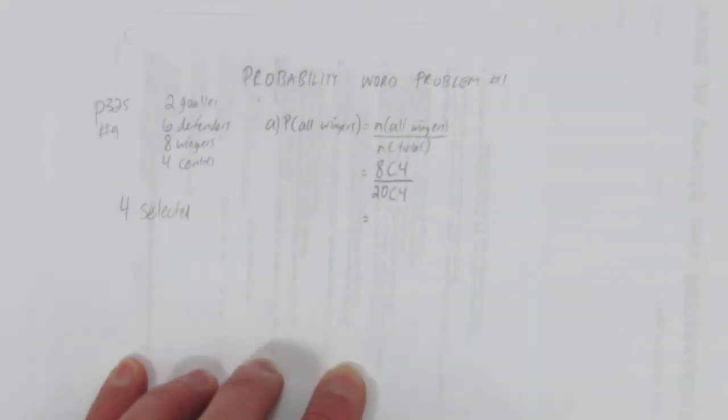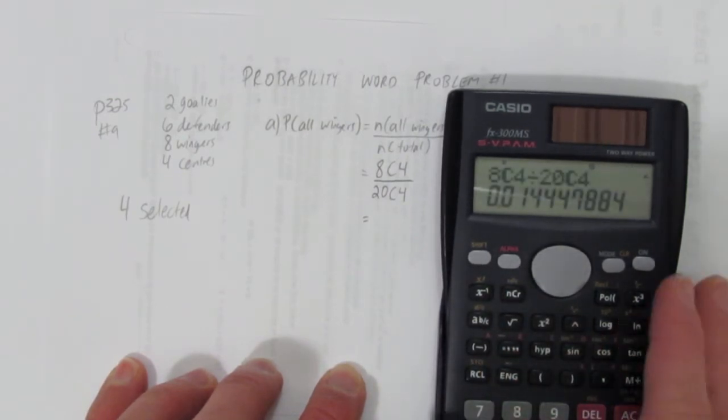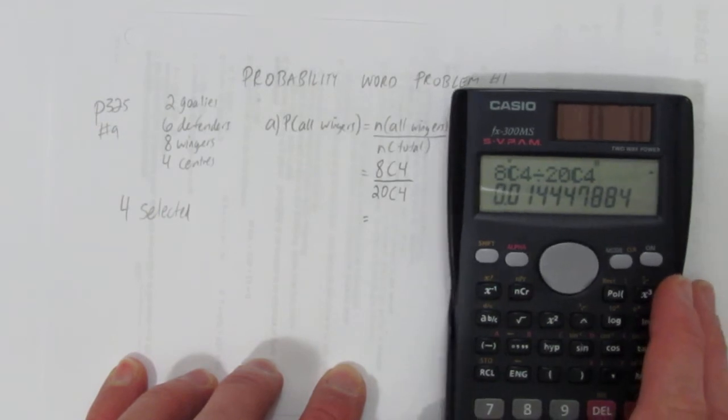Again, because order doesn't matter how we choose them. So, grabbing a calculator, we look at what's eight choose four divided by twenty choose four, and we get zero, let's round to three decimals, zero point zero one four.